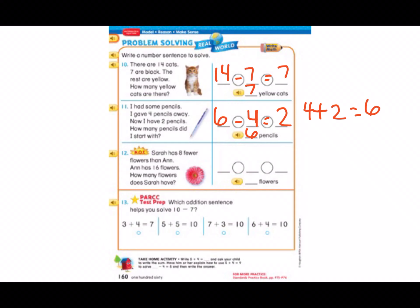Sarah has 8 fewer flowers than Ann. Ann has 16 flowers. How many flowers did Sarah have? So we know that Ann has 16 flowers and Sarah has 8 fewer. So to figure that out our subtraction sentence would say 16 minus 8 equals. I think there's a doubles fact involving 8 and 16. Right, 8 plus 8 equals 16. So Sarah has 8 flowers.